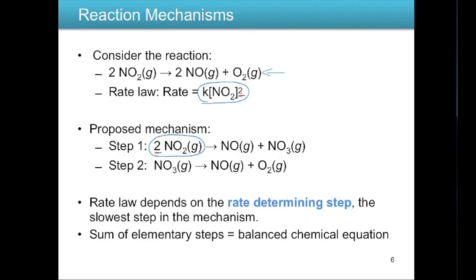This applies only to elementary reactions, not overall reactions. Additionally, the sum of the steps of a reaction mechanism must equal the balanced overall chemical equation. So if we know the rate law is second order in NO₂ and step one of the mechanism has 2NO₂ as reactants, that coefficient of 2 corresponds directly to the exponent 2 in the rate law.